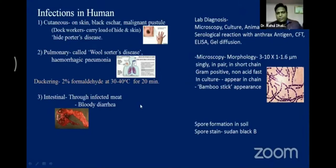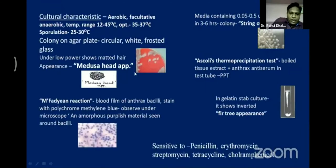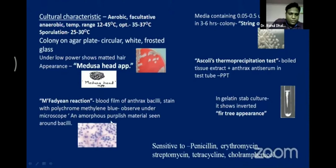For diagnosis, when you observe the bacilli under microscope they appear as streptobacilli with spores resembling a bamboo stick appearance. When grown on media and colonies are observed under the microscope, they appear like matted hair — known as Medusa head appearance. Important tests include the McFadyean reaction: take a blood film of anthrax bacilli, stain with polychrome methylene blue, and under the microscope observe amorphous purplish material around the bacilli.